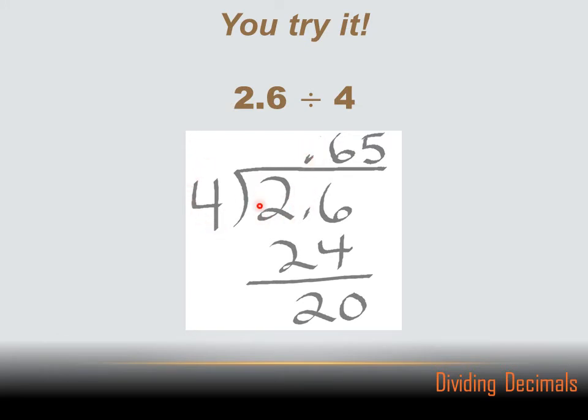And that'll go 6 times. And 6 times 4 is 24. And I've got a remainder of 2. I bring down a zero. 4 goes into 20 five times. So the answer is .65.